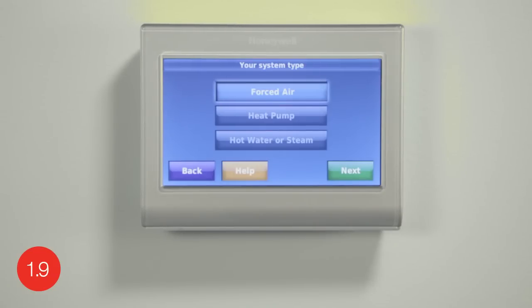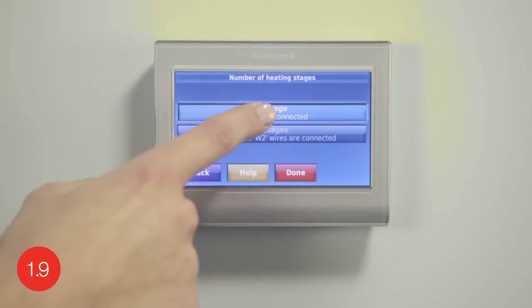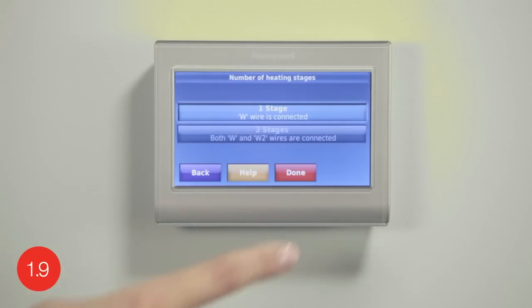The next screen will further define the system based on your system type selection. To determine your system type, press help on your thermostat screen or visit wifithermostat.com/support. When you've finished making changes, press done to save and exit.